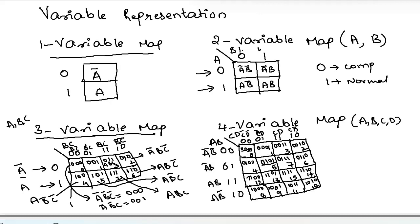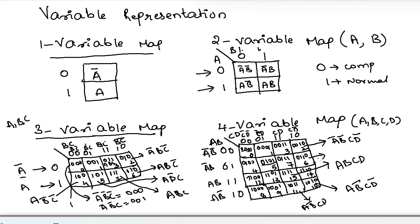Now for the variable representation in the four-variable map: cell 15 has row address A B and column address C D. A cell with row A-bar B-bar and column C D-bar represents A-bar B-bar C D-bar. For row A B-bar and column C D, the cell is A B-bar C D. For row A-bar B and column C D-bar, the cell is A-bar B C D-bar. For row A B-bar and column C-bar D-bar, the cell is A B-bar C-bar D-bar. That is the variable representation in a four-variable map.